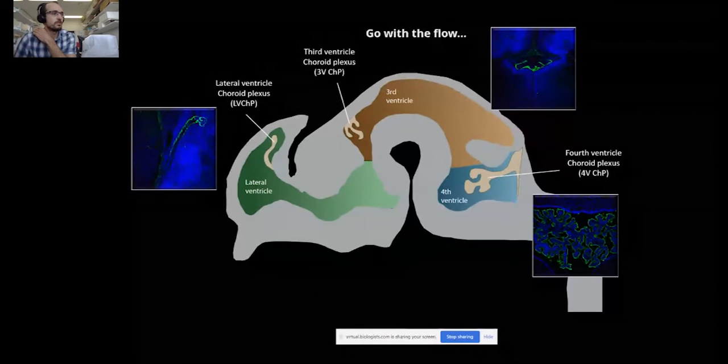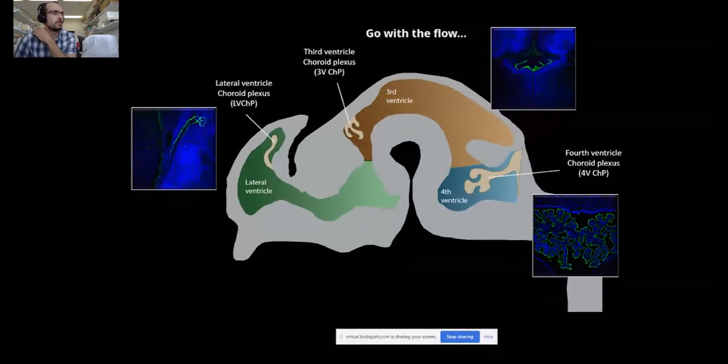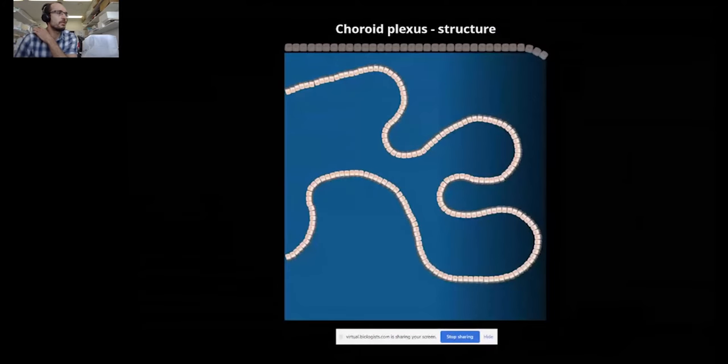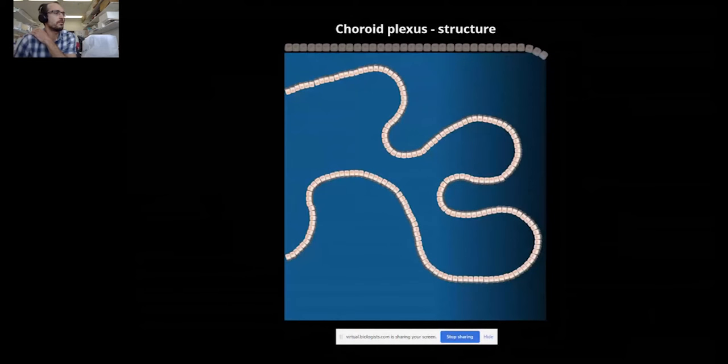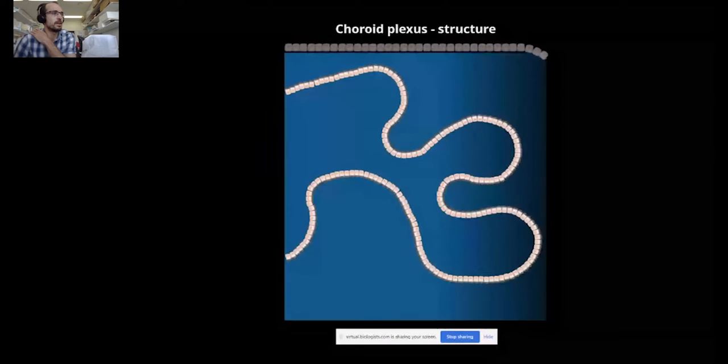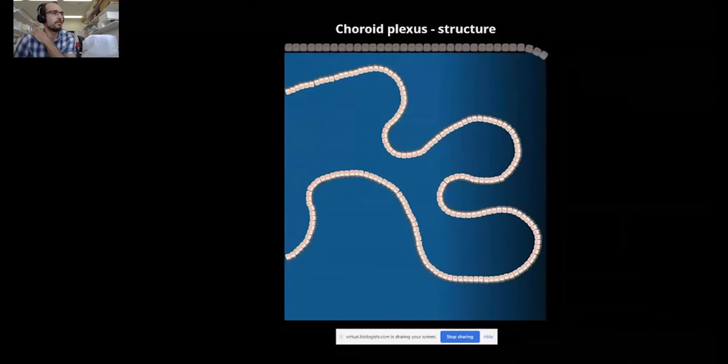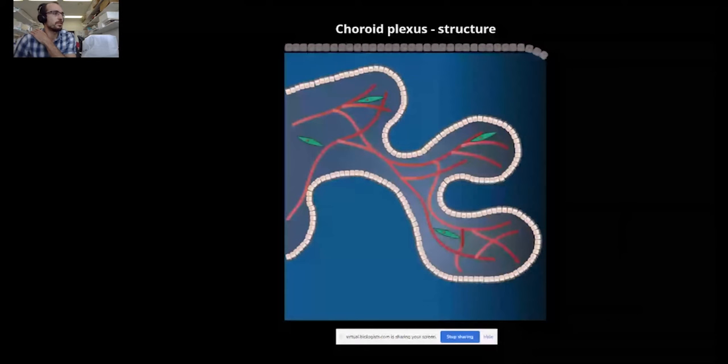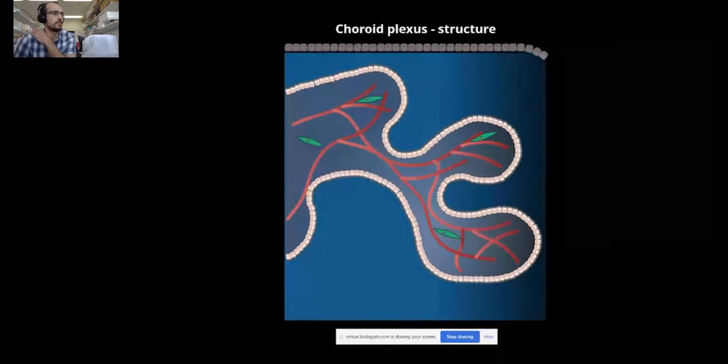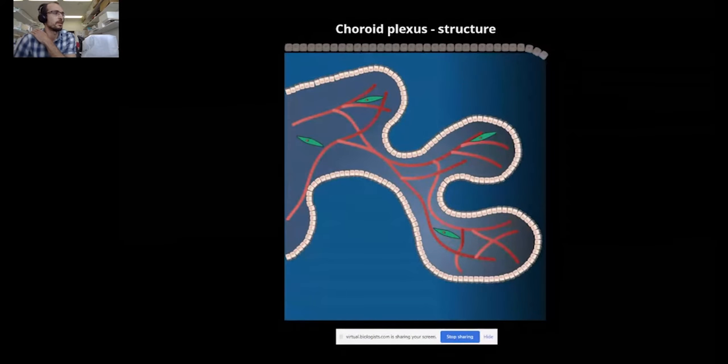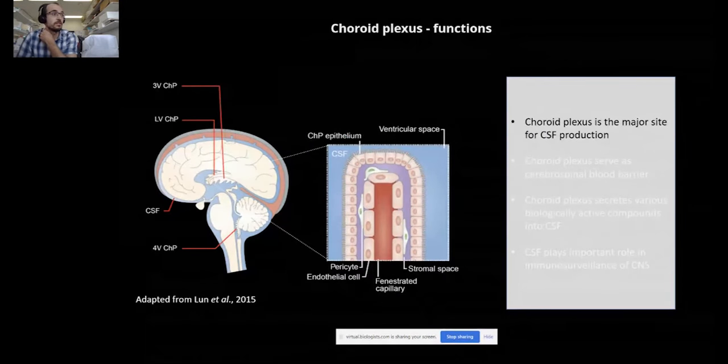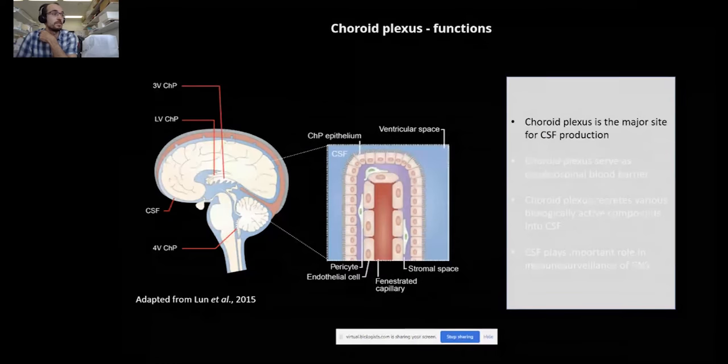I hope that you can also appreciate the nice morphological diversity of these different plexuses. Here you can see a simplified depiction of key structural features of the choroid plexus tissue, which consists of a polarized epithelial monolayer facing the cerebrospinal fluid. This epithelium encapsulates a richly vascularized stromal space containing various cells of mesenchymal origin.